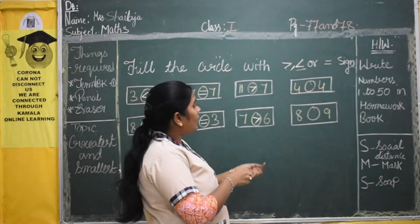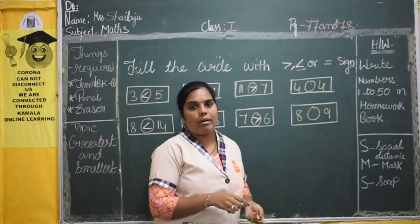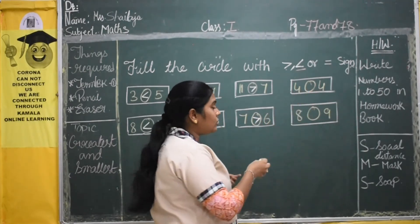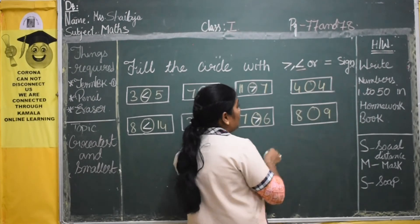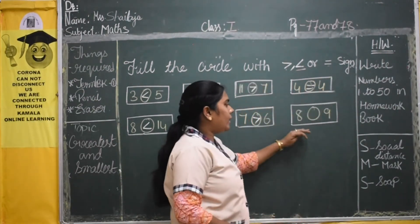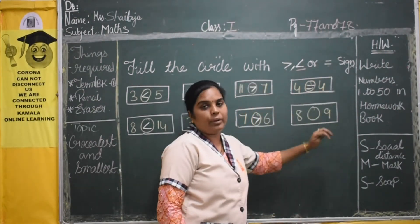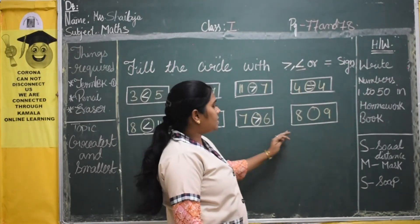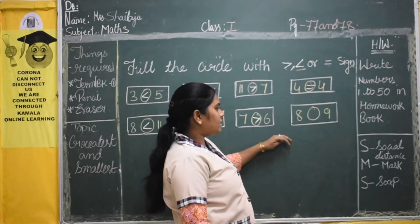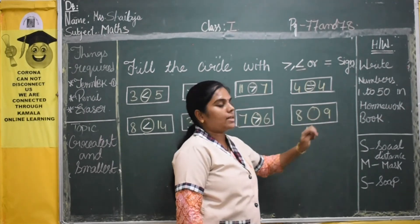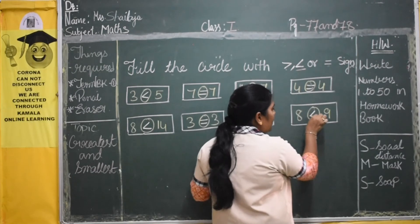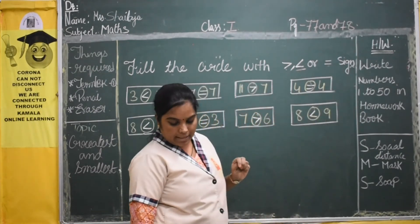Here we have 4 numbers and here we have 4 numbers. Both numbers are the same, so which sign will we use? The is-equals-to sign. And here we have 8 and here we have 9. Which is the greatest number? 9 is the greatest number, so we put the sign accordingly.